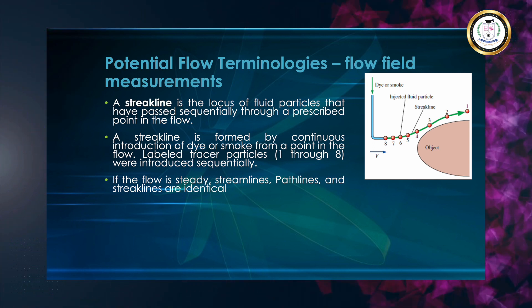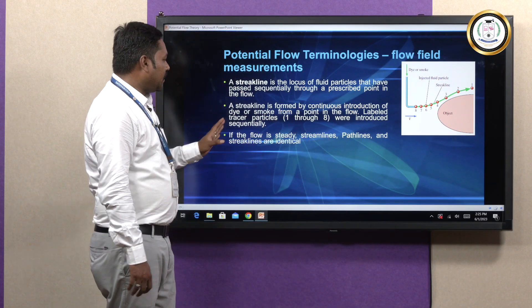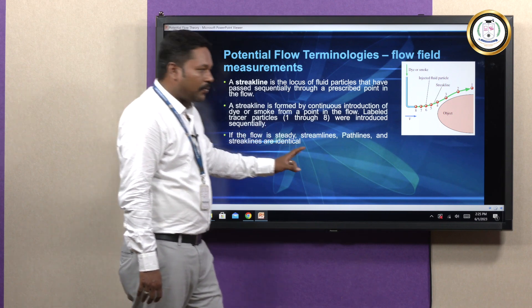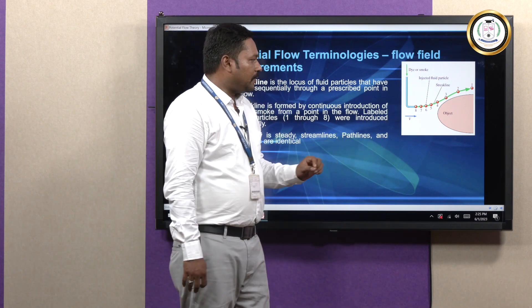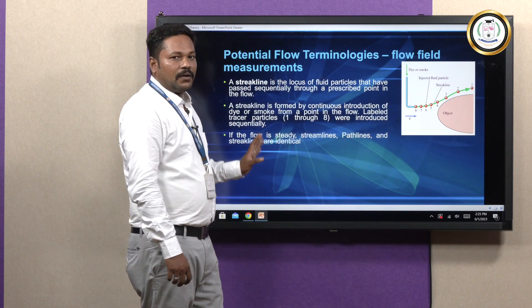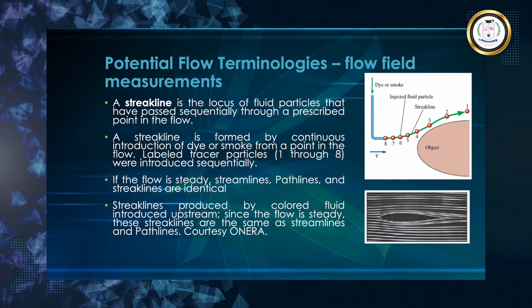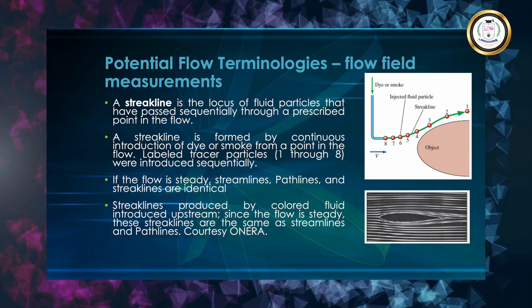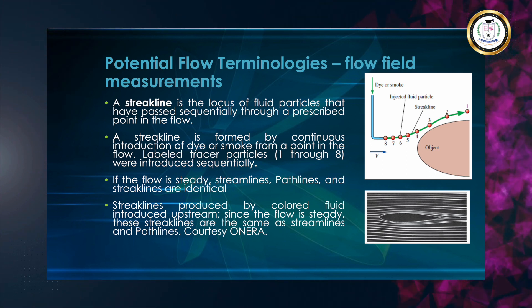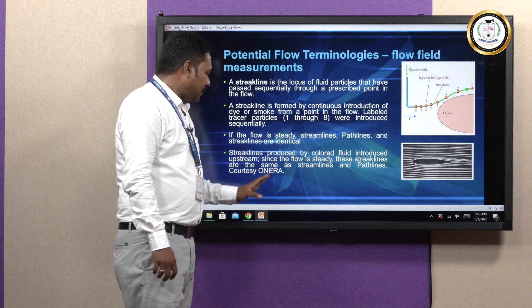The tracer particles from one through eight were introduced sequentially. When the flow is a steady flow, then the streamline, pathline, and streakline are all said to be equal. The streaklines produced by colored fluid introduced upstream — if the fluid is steady, all the streaklines are the same as streamlines as well as pathlines.